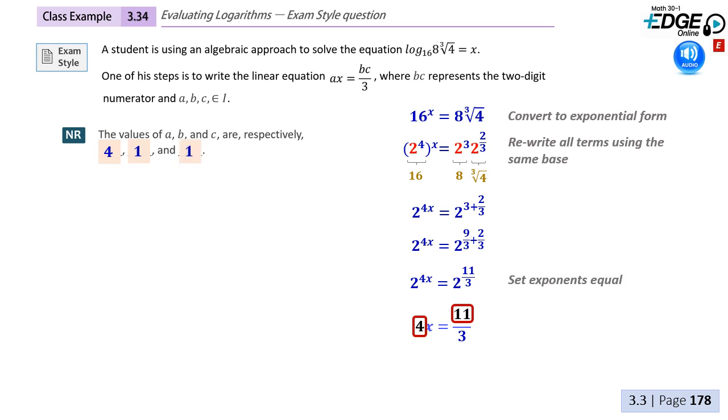Because both sides of the equation are powers of base 2, we can say that the exponent of 4x must be equal to the exponent of 11 thirds. At this point, we're done with the question. 4 represents the parameter a, and the 11 represents the two digits b and c. Our answer is 411.